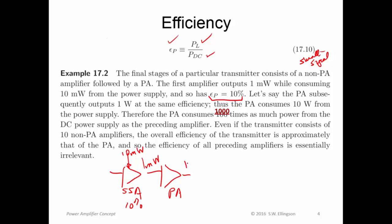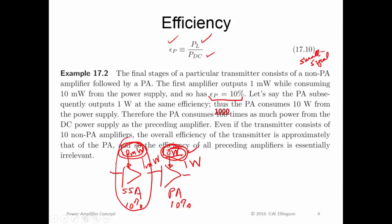The power amplifier outputs 1 watt at the same 10% efficiency, so the power consumed from the power supply is 10 watts. What you immediately see is that this figure dominates the power consumption, so the efficiency of the small signal amplifier barely matters. Even though it's 10%, it only consumes 10 milliwatts, whereas if the power amplifier has an efficiency of 10%, it consumes 10 watts and dominates the power supply budget. With small signal amplifiers, we really don't care much about efficiency — even if it's horrible, the power consumed is typically a tiny fraction of the total.